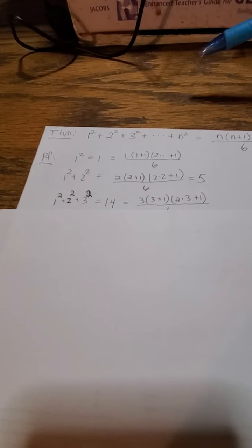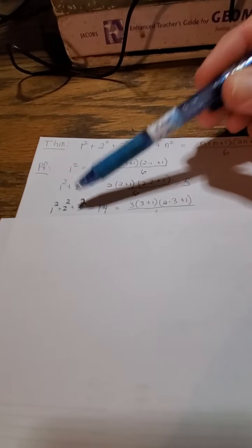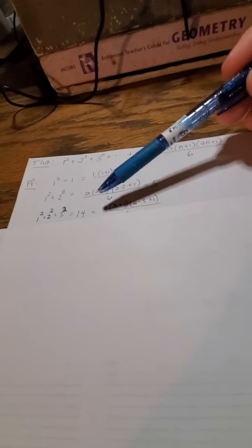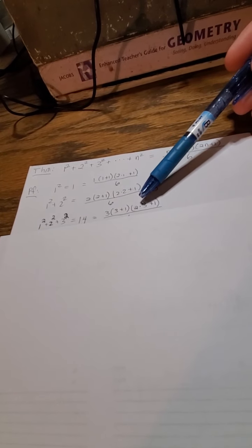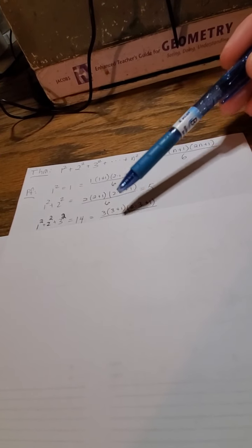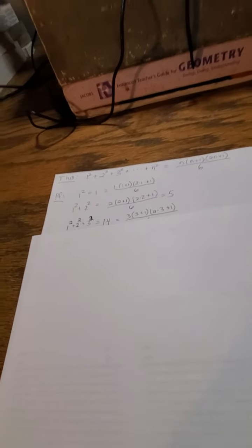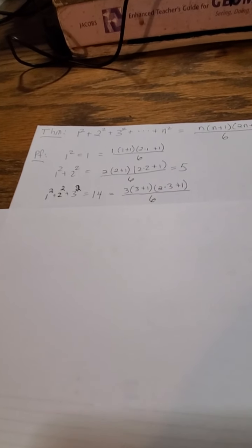1 squared plus 2 squared plus 3 squared, if you add it up, 1 plus 4 plus 9 equals 14, but that's also equal to 3 times 3 plus 1 times 2 times 3 plus 1, which is 3 times 4 times 7 divided by 6, and that does cancel out and become 14.